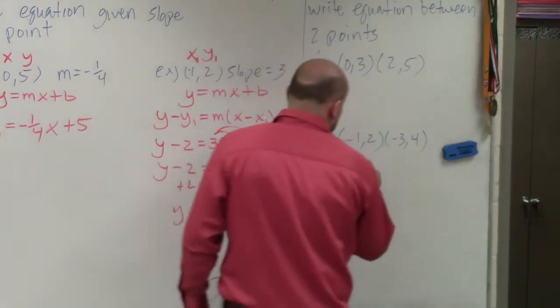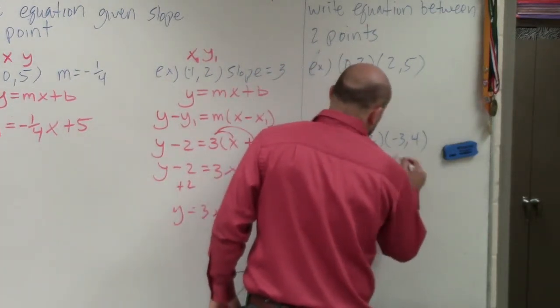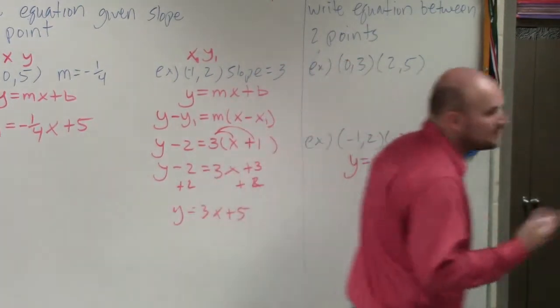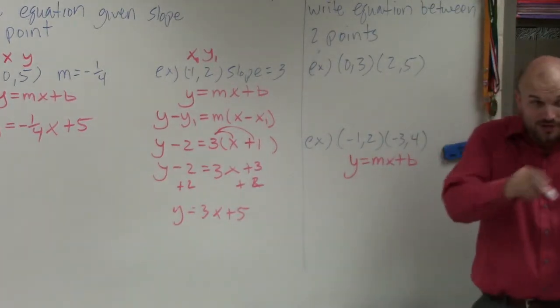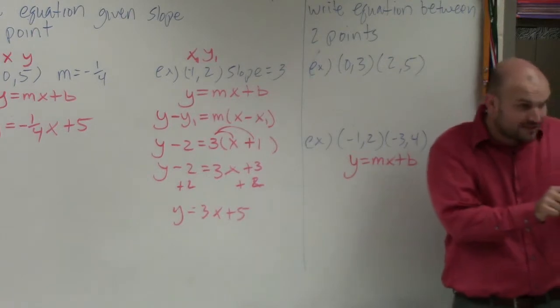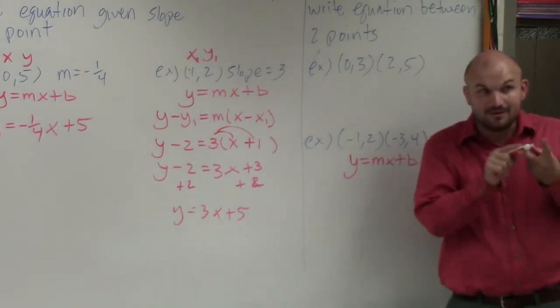So again, if we're writing the equation of the line, we want the equation to be in the format of y equals mx plus b. Correct? So to write in that format, we need to know what the slope is and what the y-intercept is. Correct?